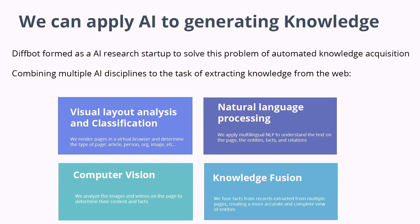Once we have all these extractions, we fuse them together — determining whether the John Smith from one page is the same as John Smith on another page, or whether this iPhone 4S on one page is the same as on another page. Using what we call record linking — a machine learning problem — we join those together. Knowledge Fusion then produces the probability of truth of each fact and retains the provenance information of the original page the fact came from.